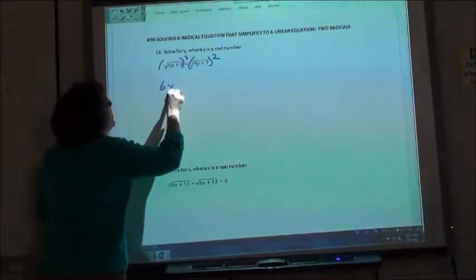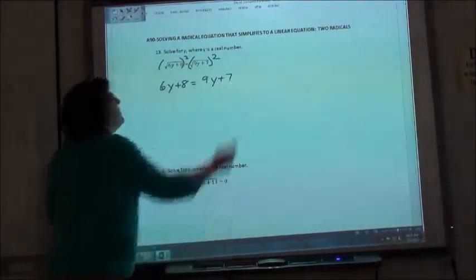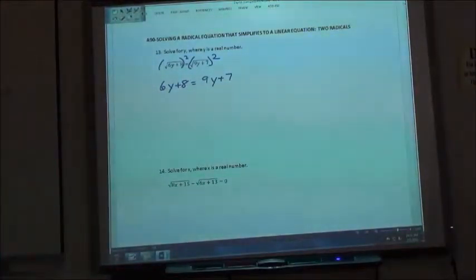So I'm going to have 6y plus 8 equals 9y plus 7. I now have to solve that. So if I'm going to solve it, I want my y's on one side, my numbers on the other side.